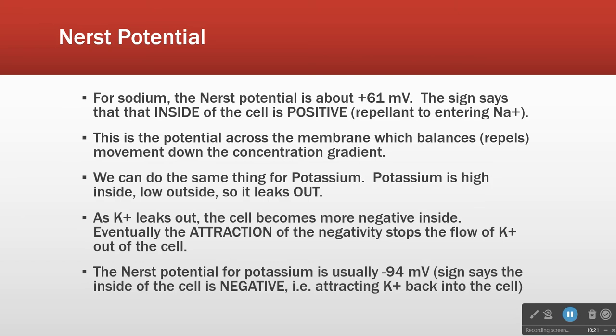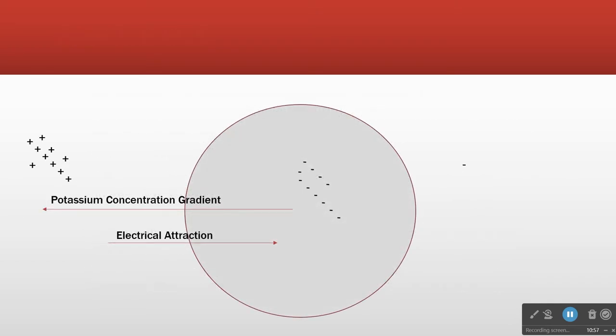A range of minus 70 to minus 90 is typical — minus 94 is maybe a little on the high side, but that's from the textbook. The Nernst potential for potassium is negative, meaning that when potassium stops moving due to concentration, the inside of the cell is negative. Potassium is trying to leave the cell; negatives attract positives.